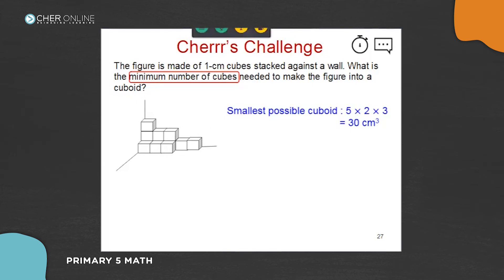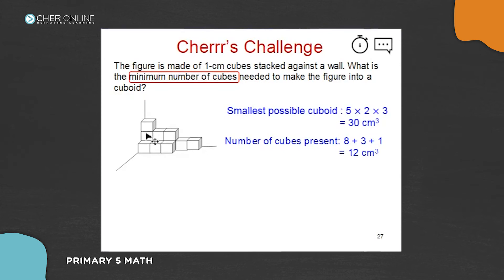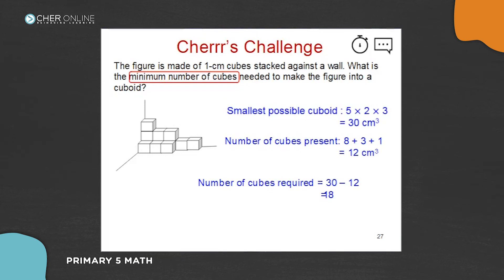The minimum volume — that is, the total number of cubes needed — is 30. The number of cubes already present we can find by counting: 8 plus 3 plus 1, using the level method. Level one: 8, level two: 3, level three: 1, giving 12. So we need 30 minus 12, which is 18. Most of you said 12, but 12 is the number of cubes already present — the question asks how many more you need to fill in.